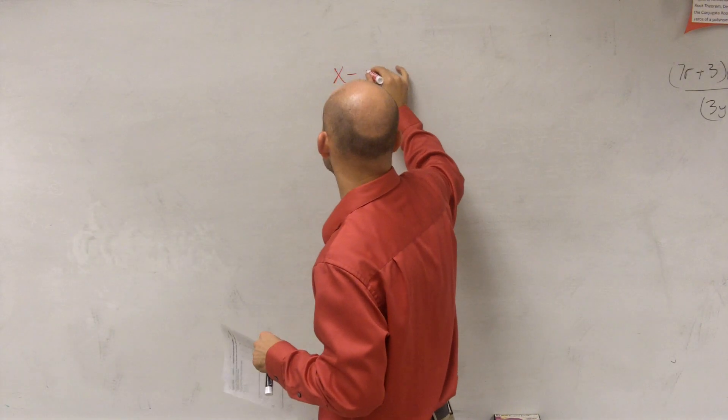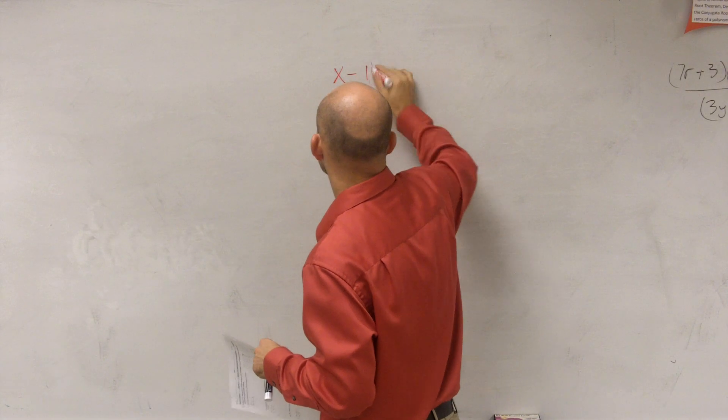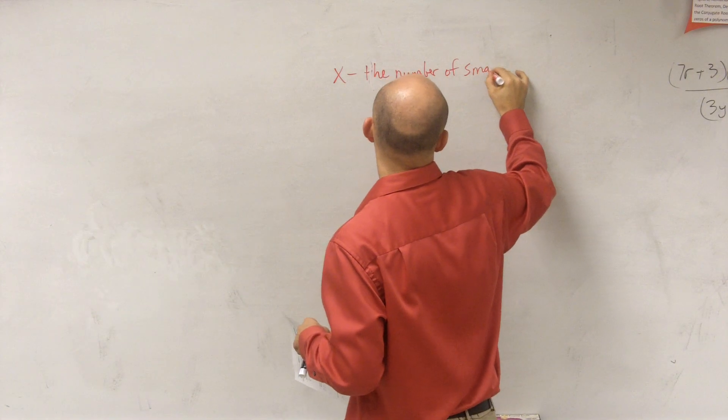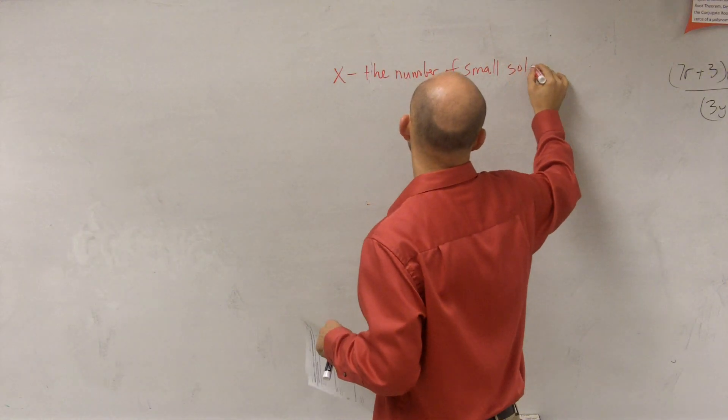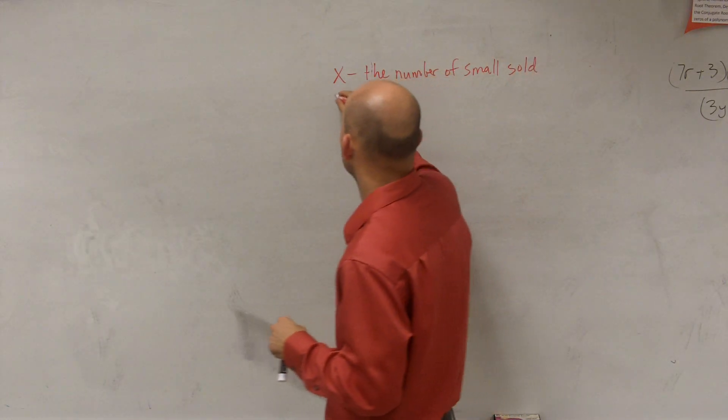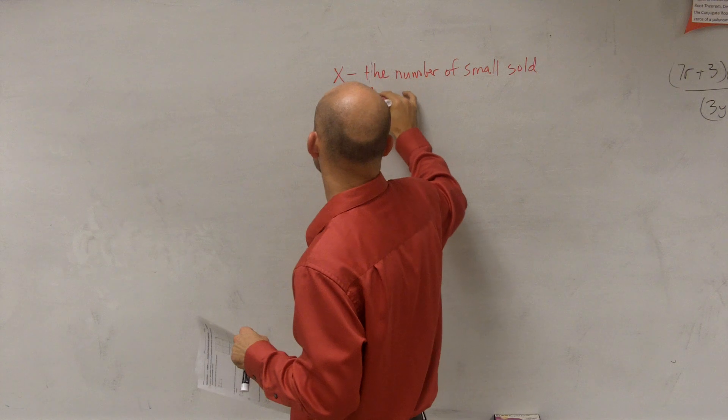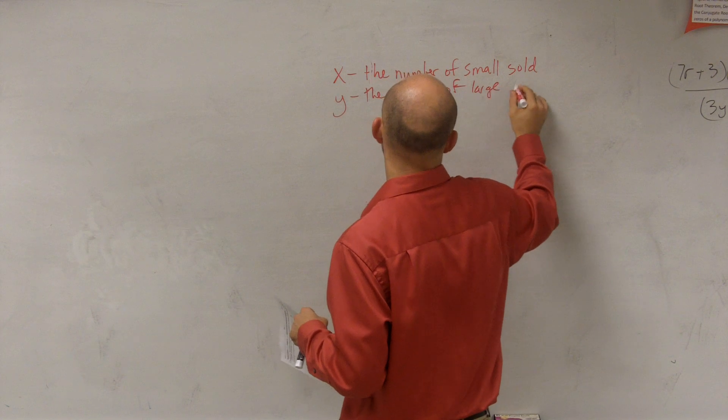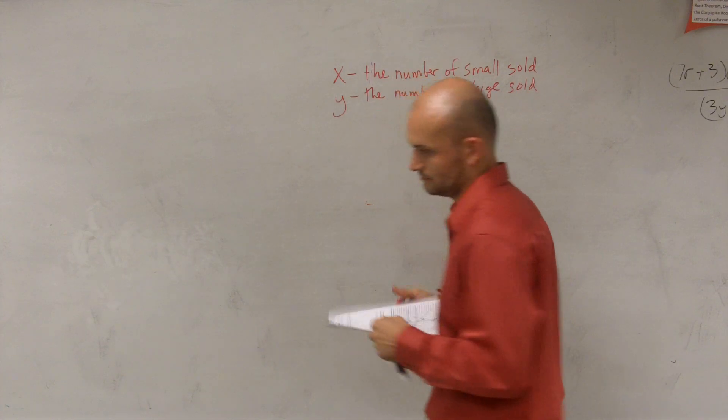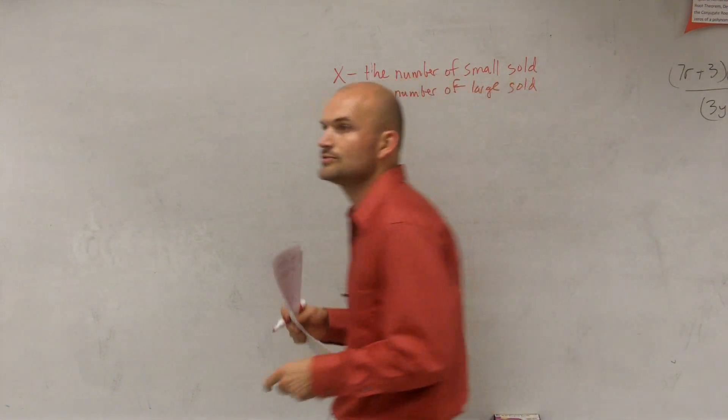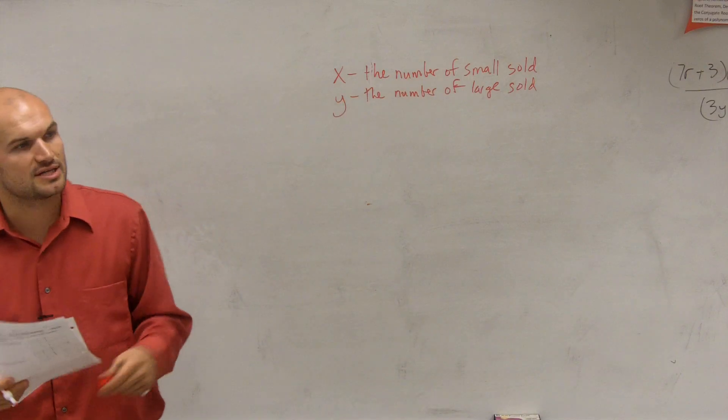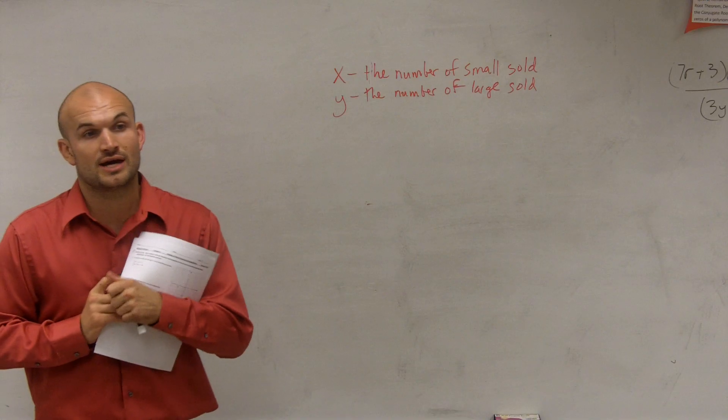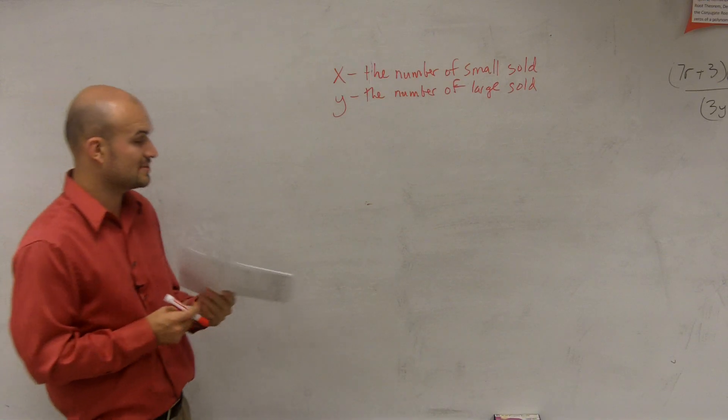So for this problem, I'm going to have x represent the number of small sold, that's small stuffed animals, and y is going to represent the number of large animals sold. It doesn't matter, you guys can do a, b, you could switch the variables, as long as you represent it, that's fine. If you guys don't do that, I will mark you down for not labeling your variables. So please make sure you guys represent that.